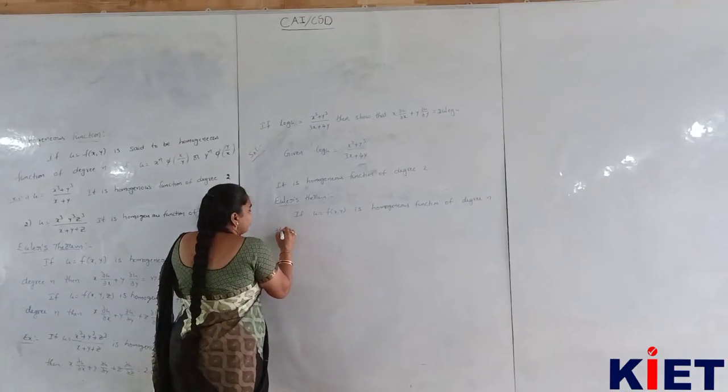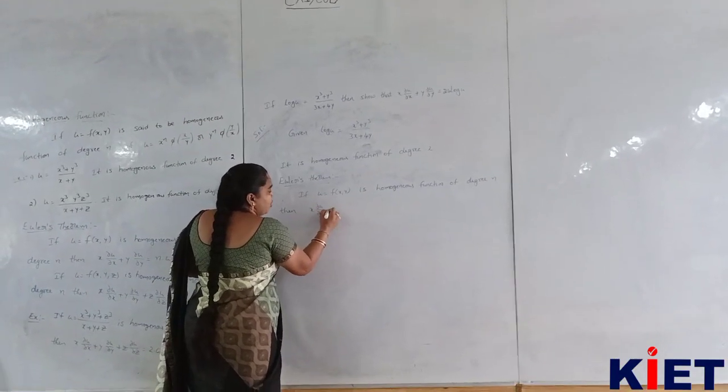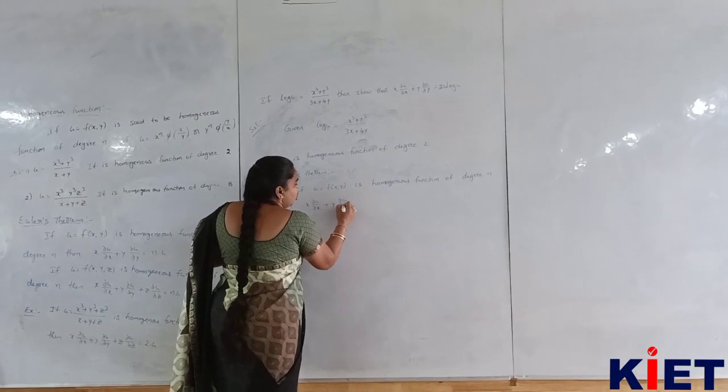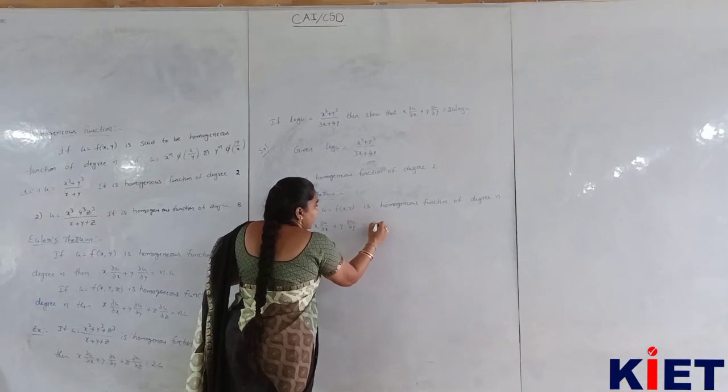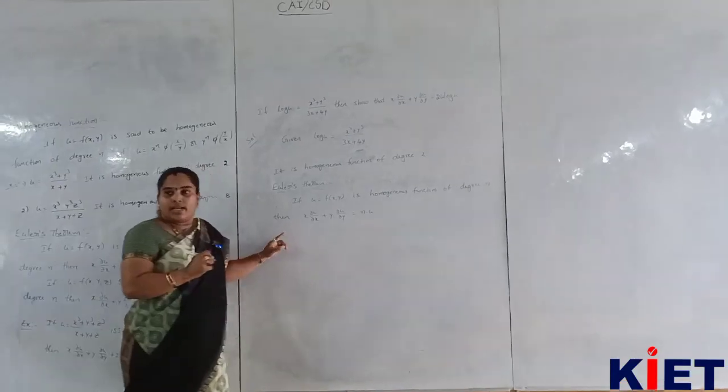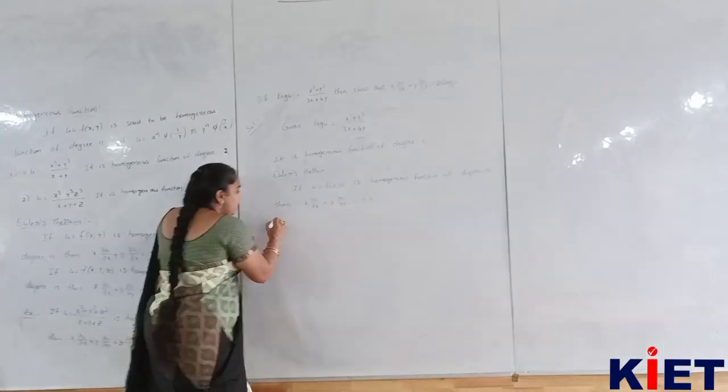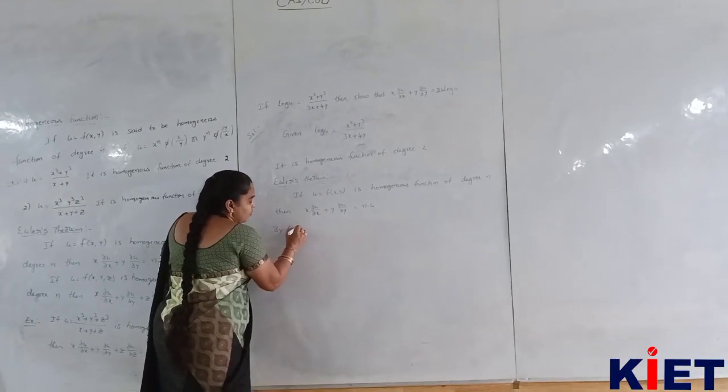Then, x into ∂u/∂x plus y into ∂u/∂y is n into u. Okay, that is the Euler's theorem. Then, by Euler's theorem.